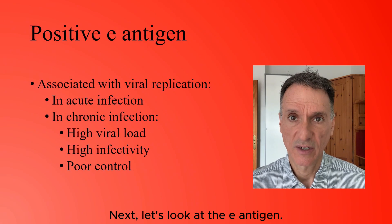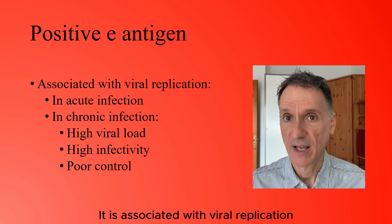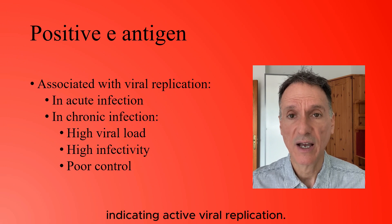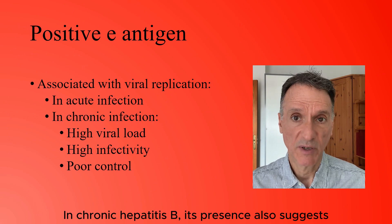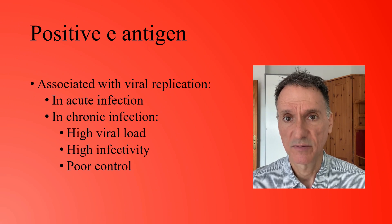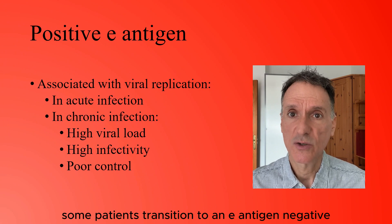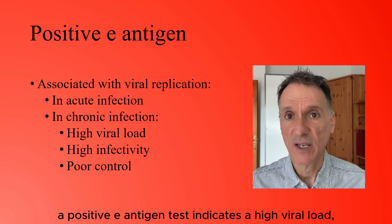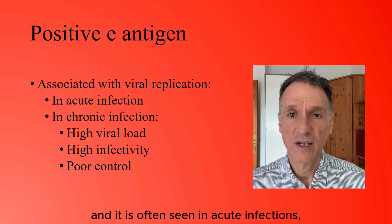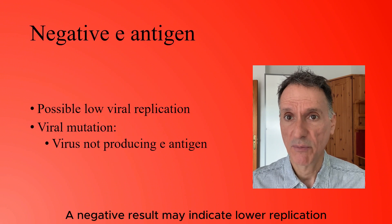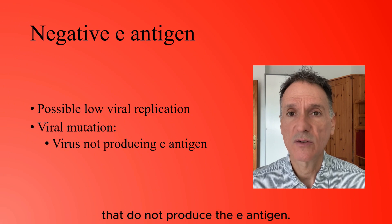Next, let's look at the E antigen. It is associated with viral replication, and in an acute infection it appears shortly after the surface antigen during the acute phase, indicating active viral replication. In chronic hepatitis B, its presence also suggests high levels of viral replication and infectivity. However, some patients transition to an E antigen negative chronic phase due to viral mutations. In summary, a positive E antigen test indicates a high viral load, high infectivity, and is often seen in acute infections or poorly controlled chronic infections. A negative result may indicate lower replication or mutant forms of the virus that do not produce the E antigen.